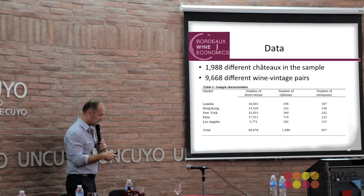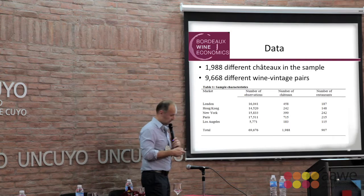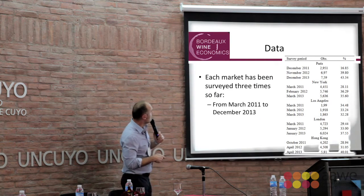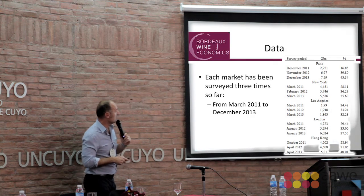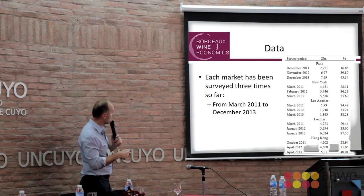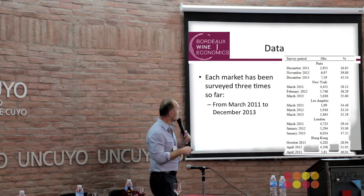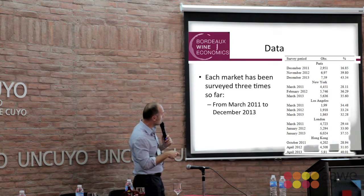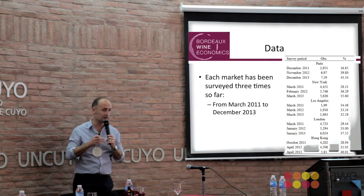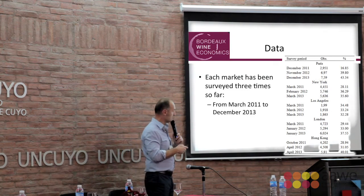We have 907 restaurants in this dataset. For each market, the market has been surveyed three times so far. For Paris, for example, this runs from December 2011 to December 2013, and it's about the same for the other markets — not exactly the same, so we will have to control for the time dimension in the econometric analysis.